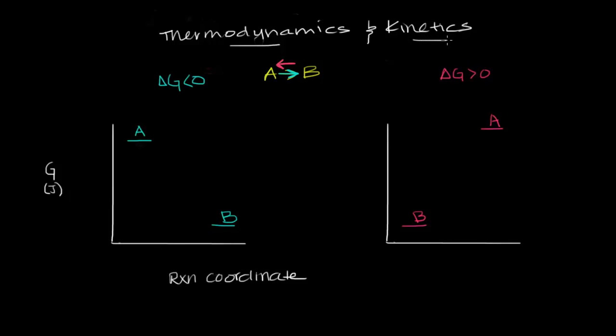This kinetic barrier of energy is referred to as the free energy of activation, or simply activation energy. So I'm going to put in parentheses E sub A, which stands for activation energy. And remember that delta G, of course, is talking about thermodynamics.